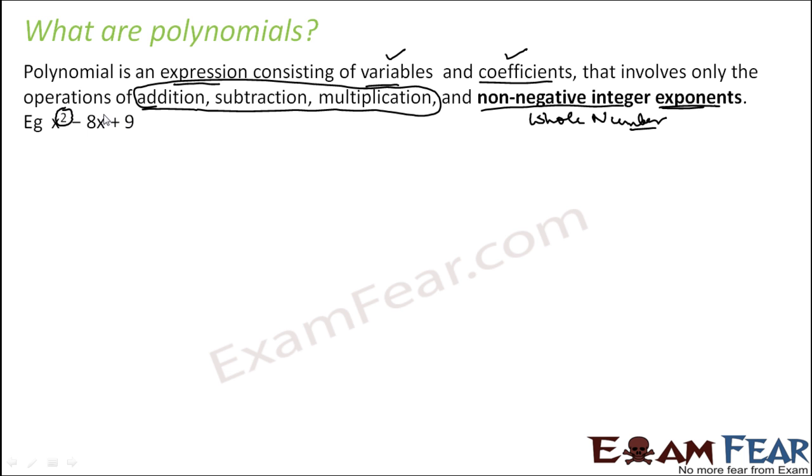So what are polynomials? They are nothing but expressions which consist of variables. Variables are something like x, y. For example, y squared plus 2y plus 3. This is a polynomial. y is a variable and exponent here is 2. That is a whole number. Here y is nothing but y to the power 1, also a whole number. And 3 I can write as 3y to the power 0. And 0 is also a whole number.